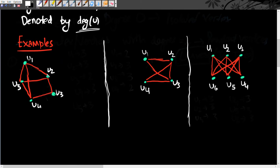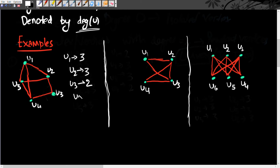In the first example, there is a graph with five vertices u1, u2, u3, u4, u5, connected by the edges marked in red. For u1, there are three edges: u1-u5, u1-u4, and u1-u2, so its degree is three. Similarly, u2 has degree three, u3 has degree two, u4 has degree three, and u5 has degree three.